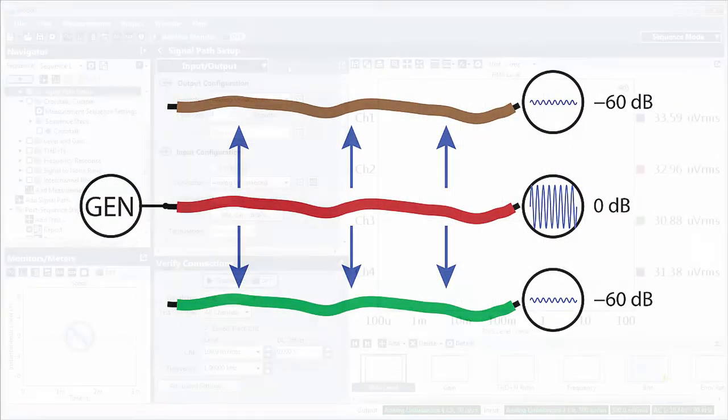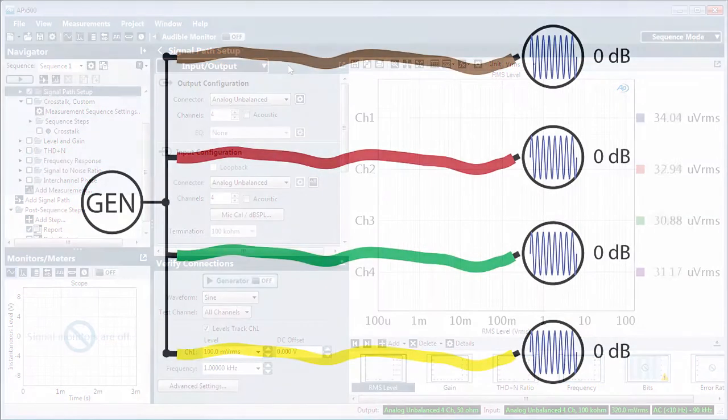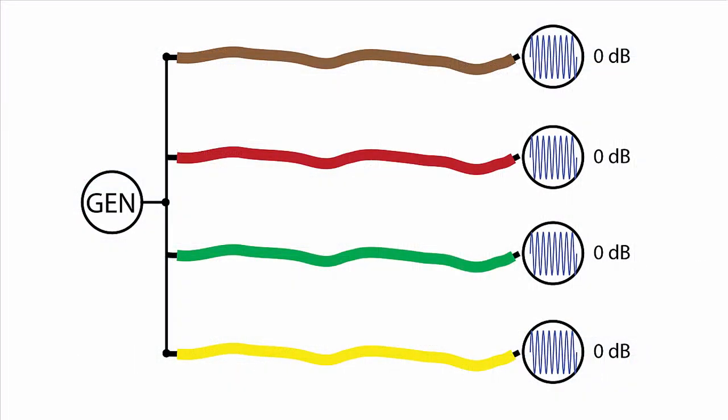Crosstalk Custom provides a way to measure crosstalk in a DUT that does not have a one-to-one mapping of input and output channels. A distribution amplifier, for example, may have one input channel that can be routed to all four output channels.